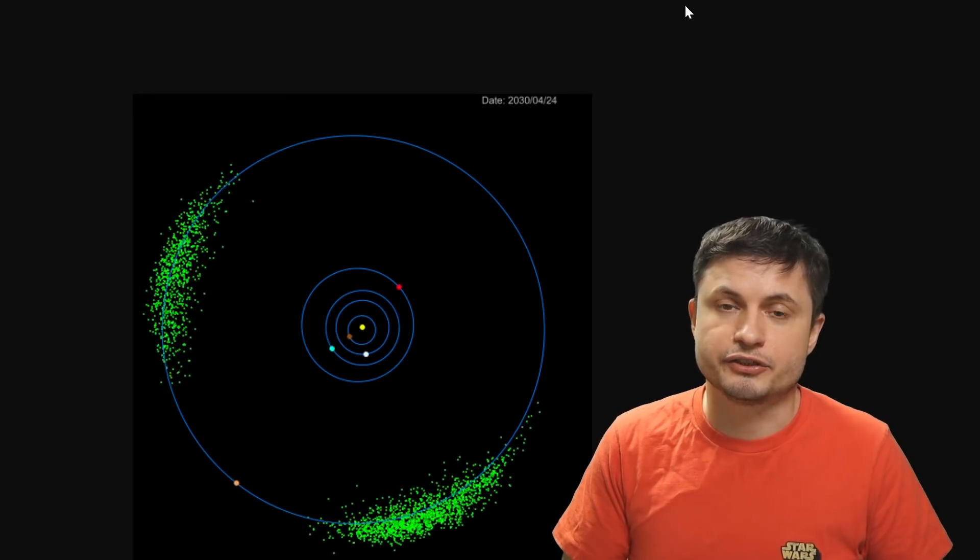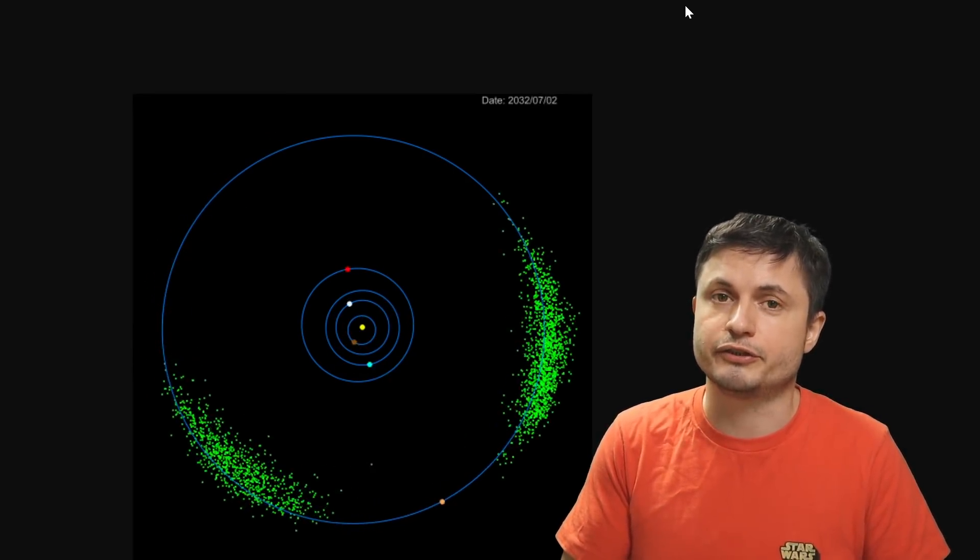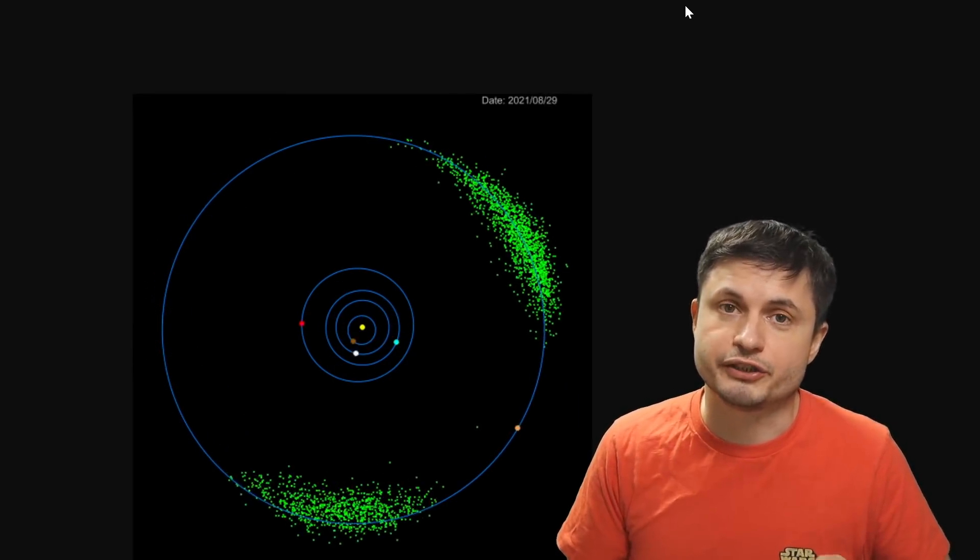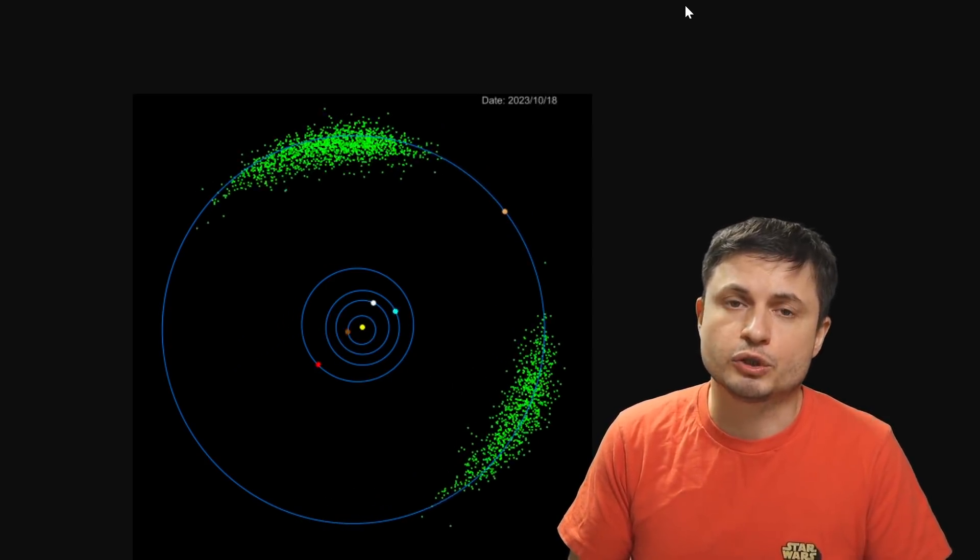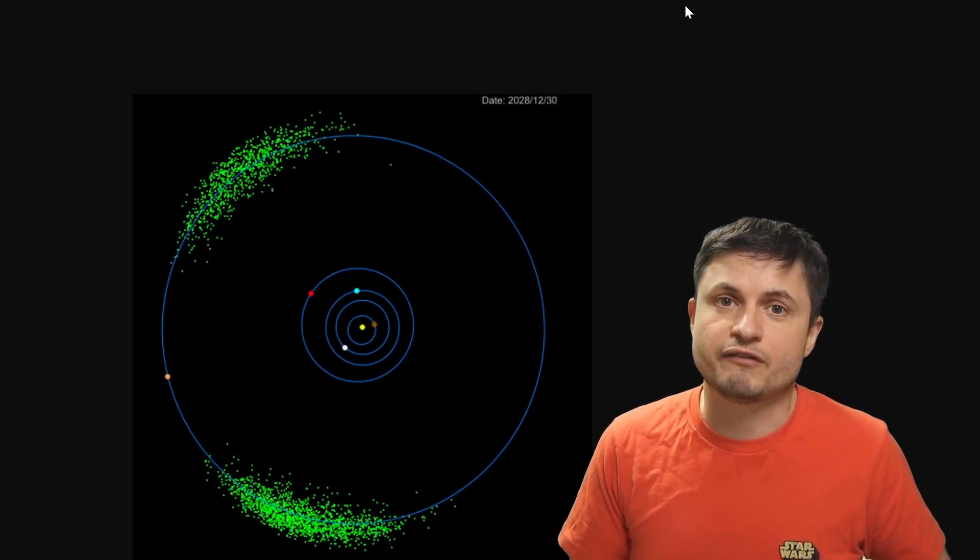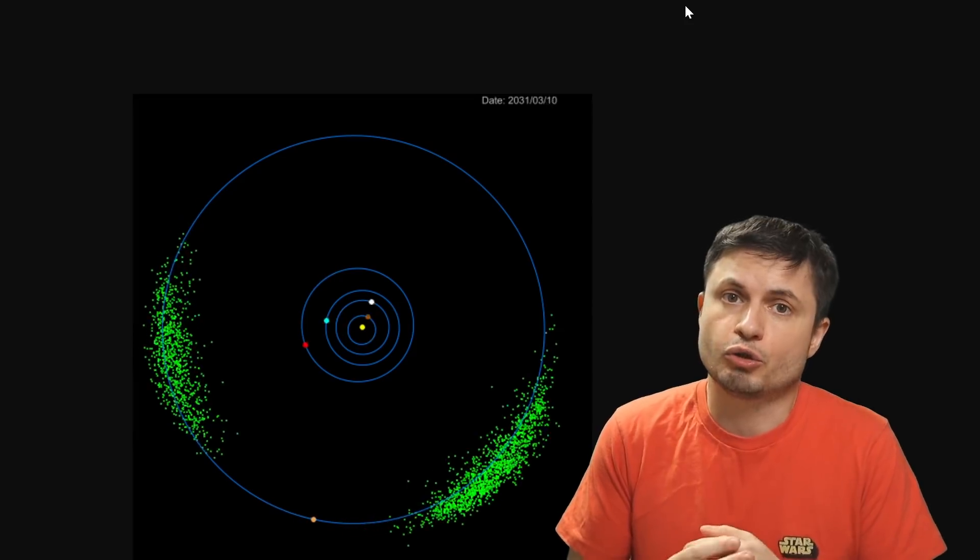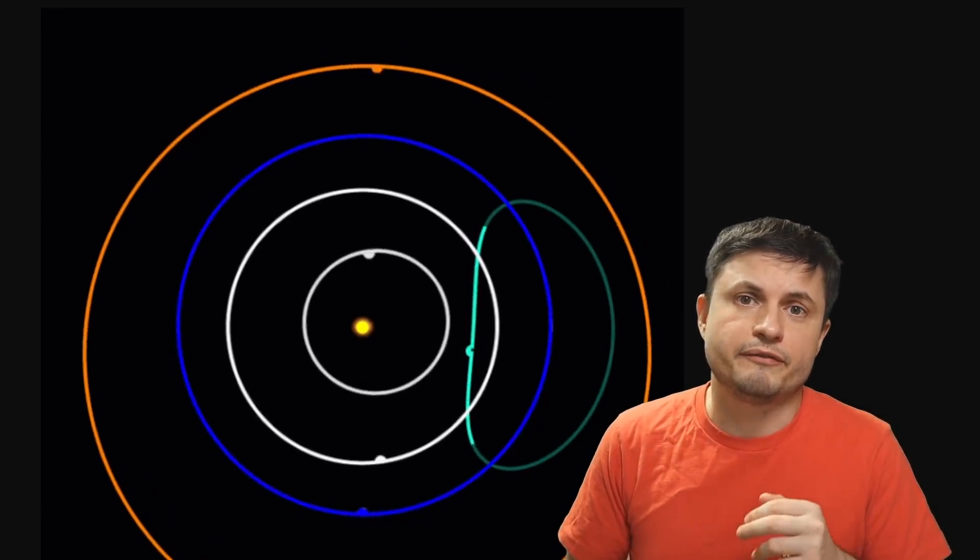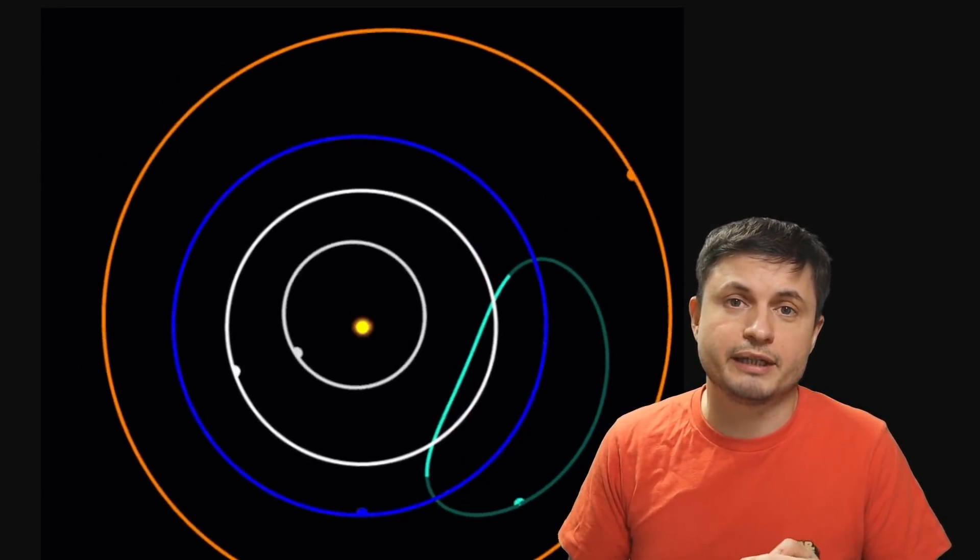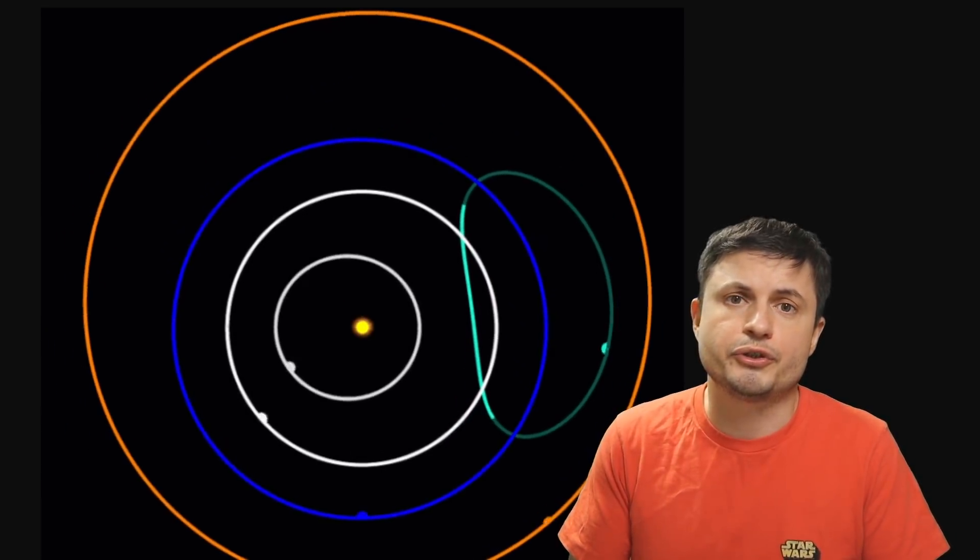Anyway, so trojans are definitely exciting. There's a lot of things we can learn about the solar system and other planets by studying them. But for now, that's kind of all we know. It is definitely exciting to discover another one of these objects in the orbit of our own planet, and it will be very exciting to find out more about it and its origins in some of the future studies.